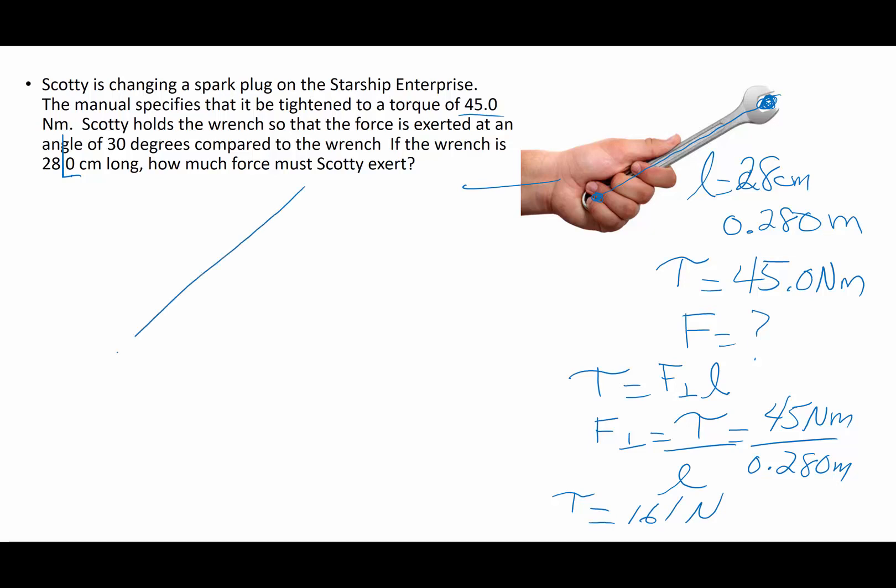Now, if this is the lever arm, that's the wrench itself, and the force is applied at an angle of 30 degrees to that lever arm or to that wrench, I only want the perpendicular component of this force vector to contribute to this force.